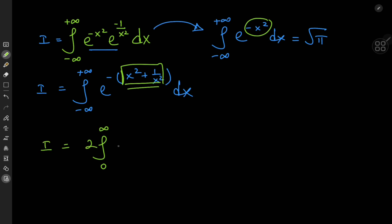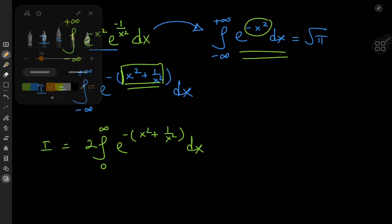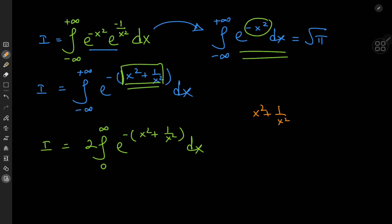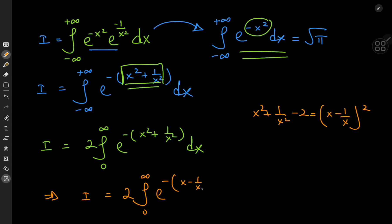So we have i equal to twice the integral of e to the negative x squared plus 1 by x squared dx. Now, notice that x squared plus 1 by x squared minus 2 equals x minus 1 by x squared, so this implies that I can write i as twice the integral from 0 to infinity of e to the negative x minus 1 by x squared plus 2.